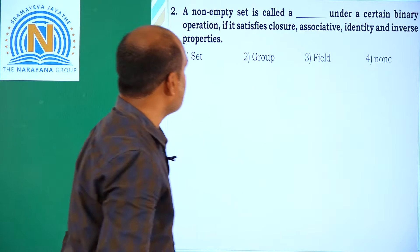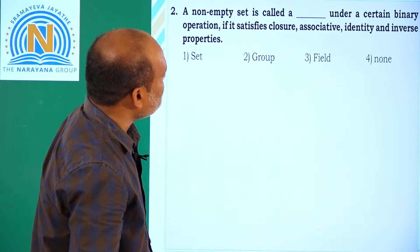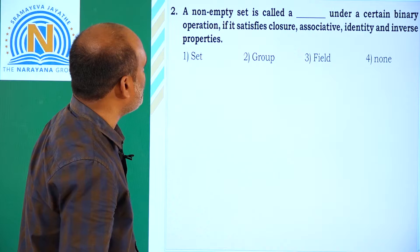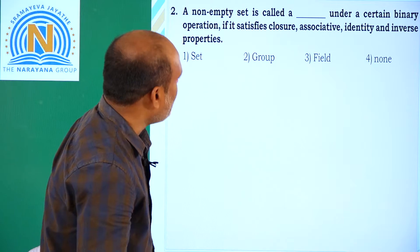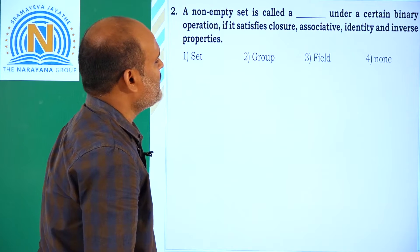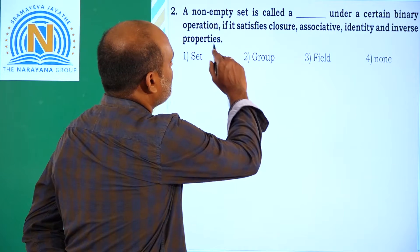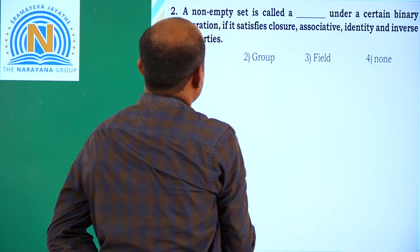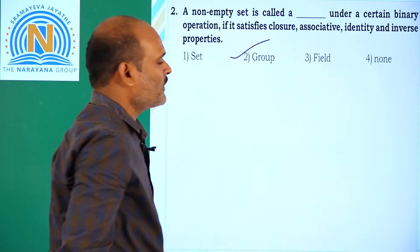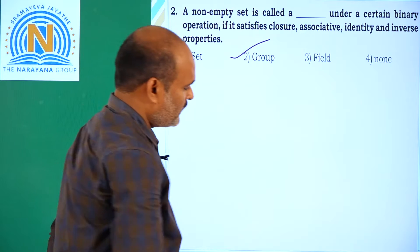Now, coming to the next one. A non-empty set is called a group under certain binary operations if it satisfies closure, associative, identity, and inverse property. All these four properties - that is called group.